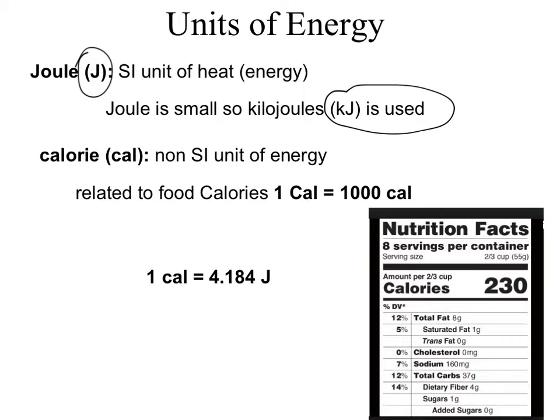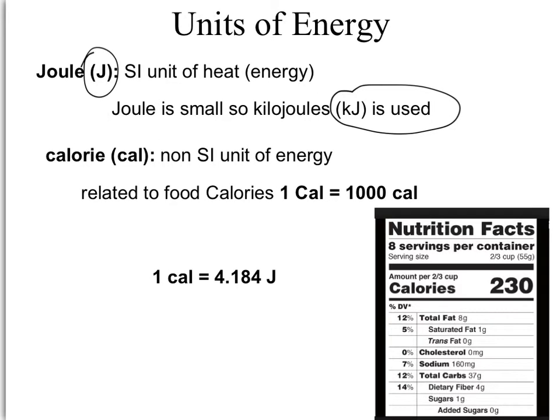The calorie is a non-SI unit of energy related to the food calories we see on packaging. One food calorie, written with a capital C, is actually equal to 1,000 small calories.